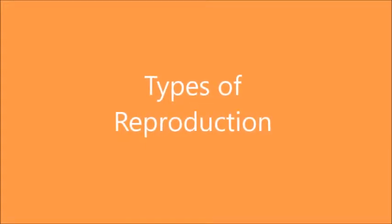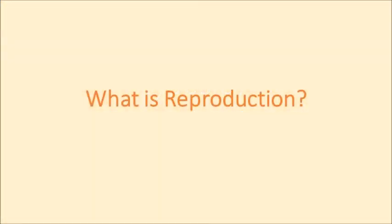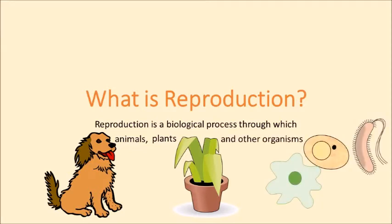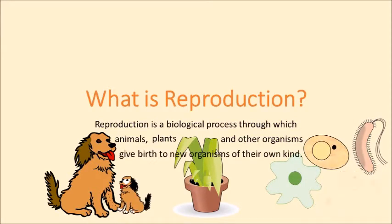Types of reproduction. What is reproduction? Reproduction is a biological process through which animals, plants, and other organisms give birth to new organisms of their own kind.